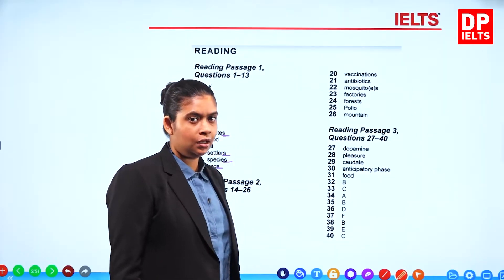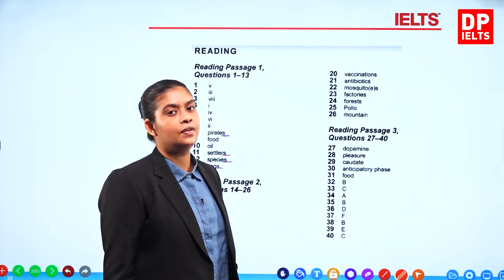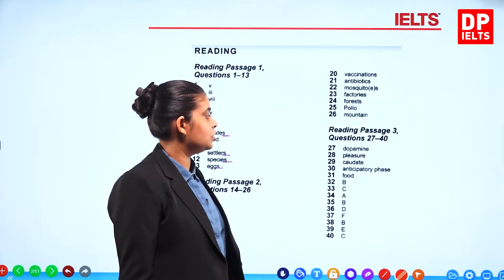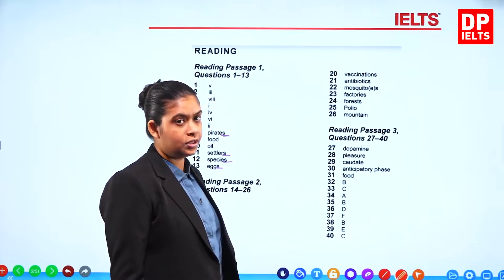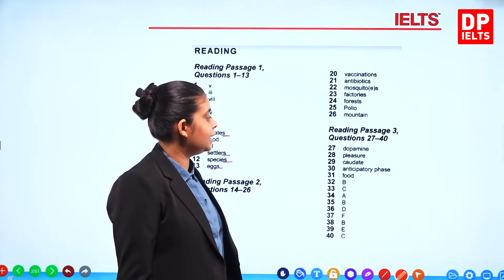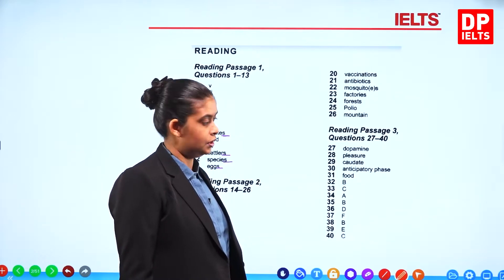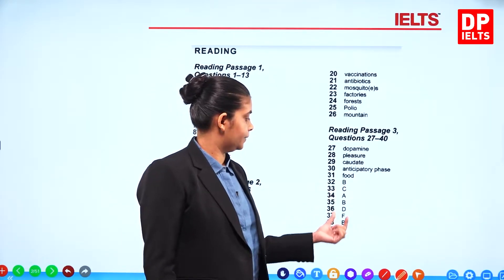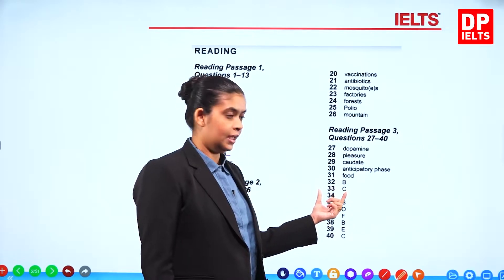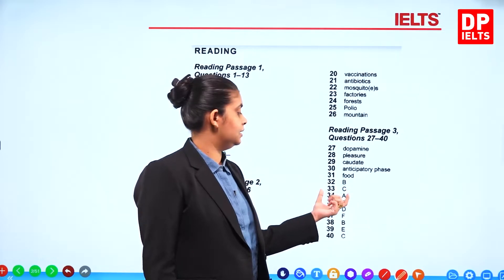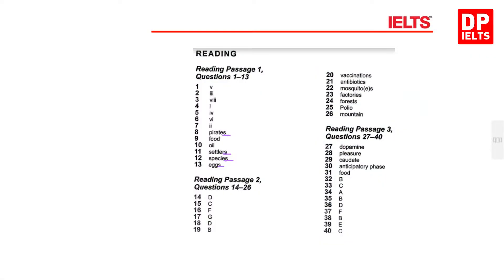Passage 3, questions 27 to 40. The answers are: dopamine, pleasure, caudate, anticipatory phase, food. Then: B, C, A, B, D, F, B, E, C.